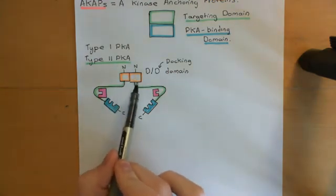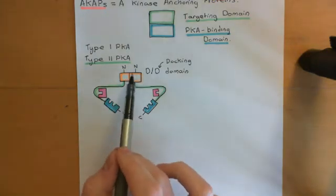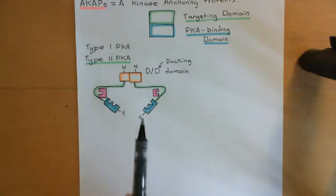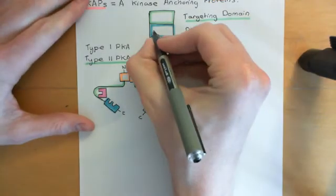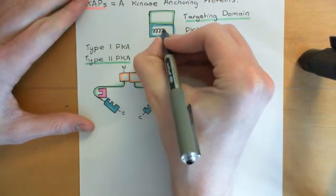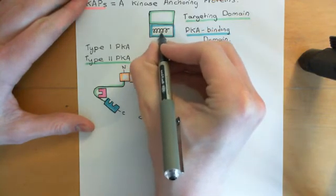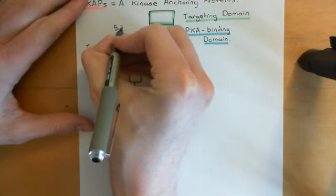Something quite interesting is known about the interaction between the PKA binding domains of AKAPs and the dimerization and docking domains: all AKAPs that have been found contain a structure called an amphipathic helix, which seems to be absolutely essential for binding to the dimerized dimerization/docking domains. This amphipathic helix is located in the PKA binding domain and has five turns — it's quite a short helix.